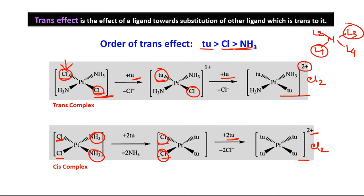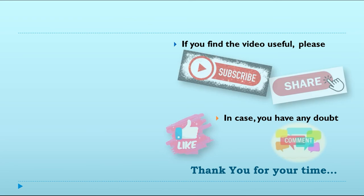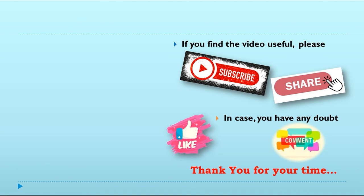So the answer to the question of how to distinguish the two geometrical isomers of this platinum complex is the Kurnakoff test. In this test we are basically utilizing the trans effect of these three ligands. The order of trans effect is: thiourea > Cl > NH3. If you find the video helpful, please go ahead and have a look in the description box below where you will find all the important playlist links.